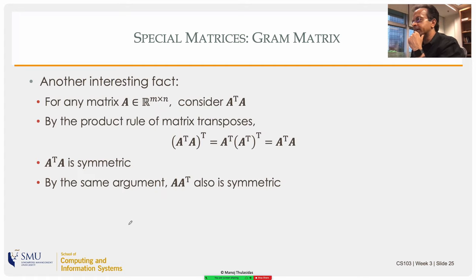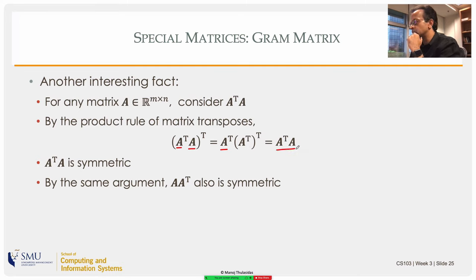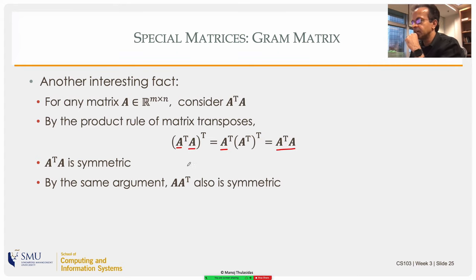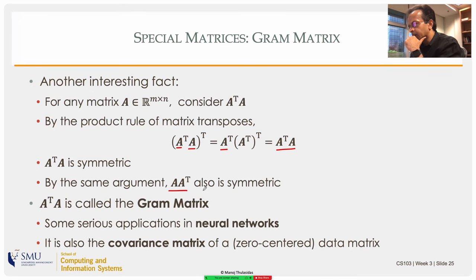Now: are A transpose A and A A transpose symmetric matrices? Yes. If I take A transpose A and transpose it, I get (A transpose) transpose times A transpose, which is A times A transpose — wait, more carefully: (A^T A)^T = A^T (A^T)^T = A^T A, which is the same as what I started from. So A transpose A is symmetric. By the same argument, A A transpose is also symmetric.